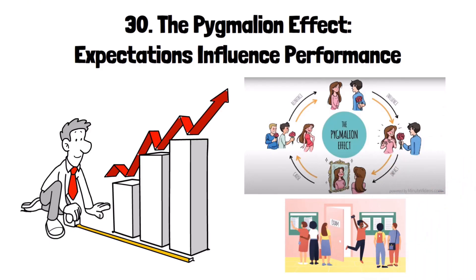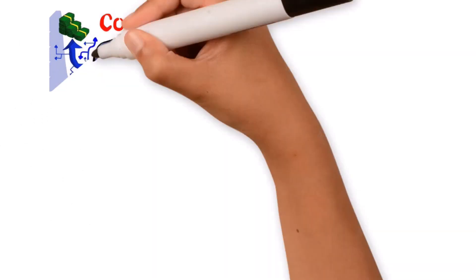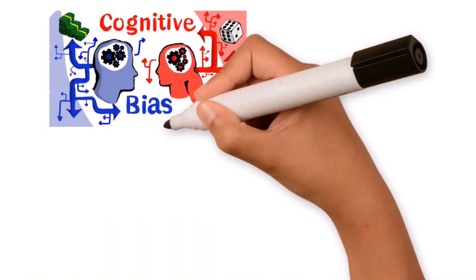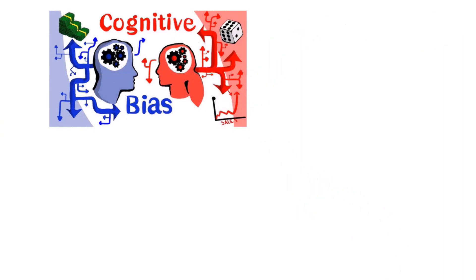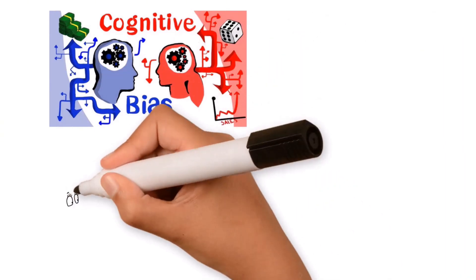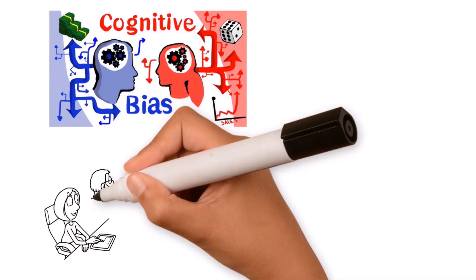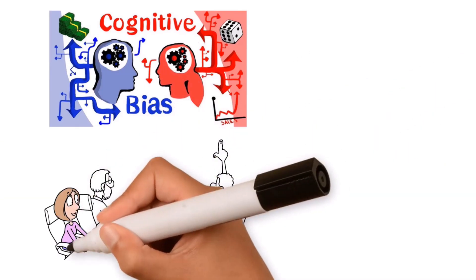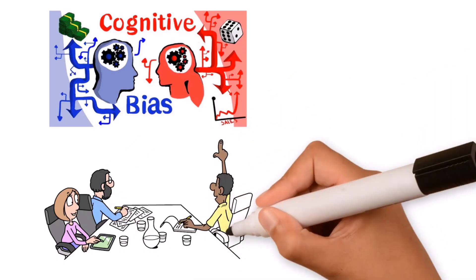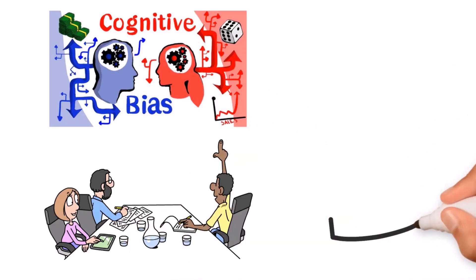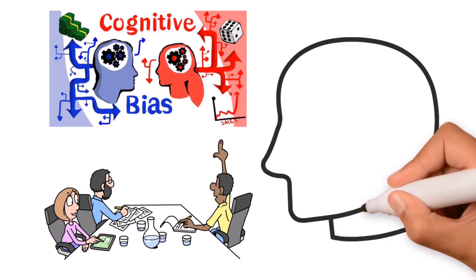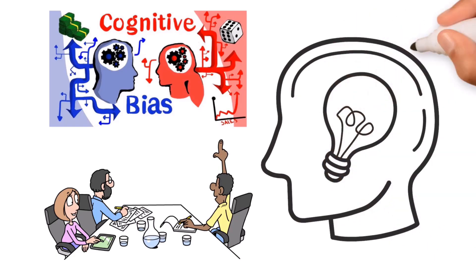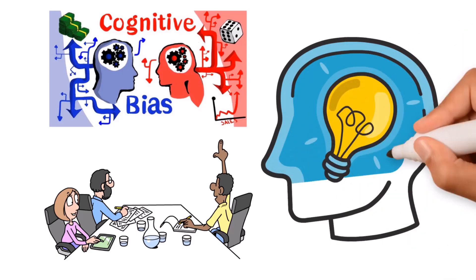Cognitive biases are a fundamental aspect of human thinking, influencing our decisions, judgments, and perceptions in ways that are often subtle and unconscious. By understanding these biases, we can become more aware of the ways in which our thinking can be skewed, allowing us to make more rational, informed decisions. Whether in personal relationships, business, or everyday life, recognizing and mitigating the effects of cognitive biases is essential for clear thinking and effective decision-making.